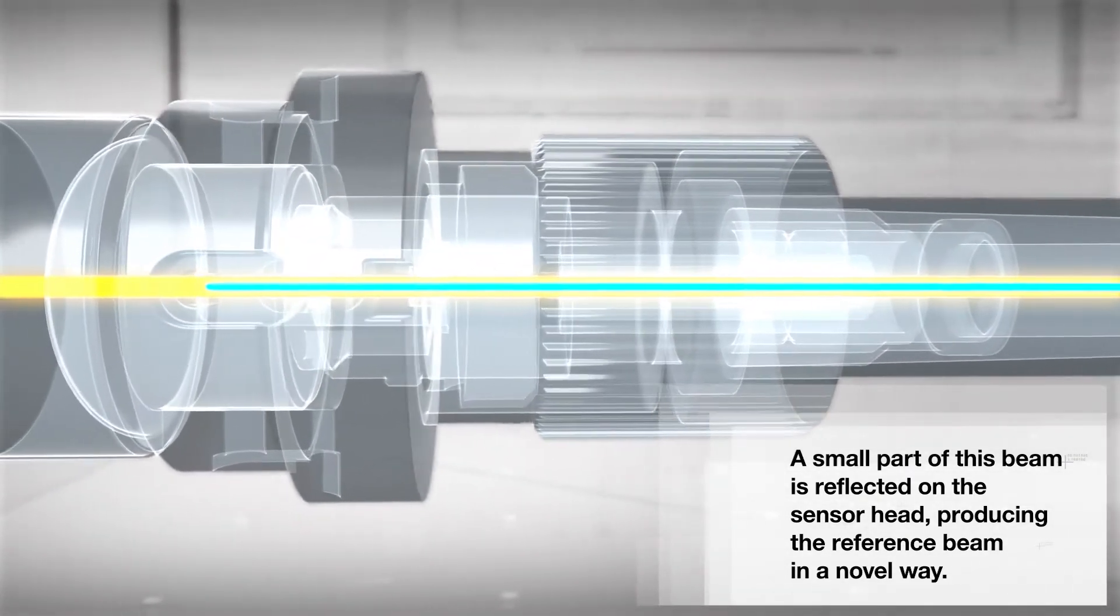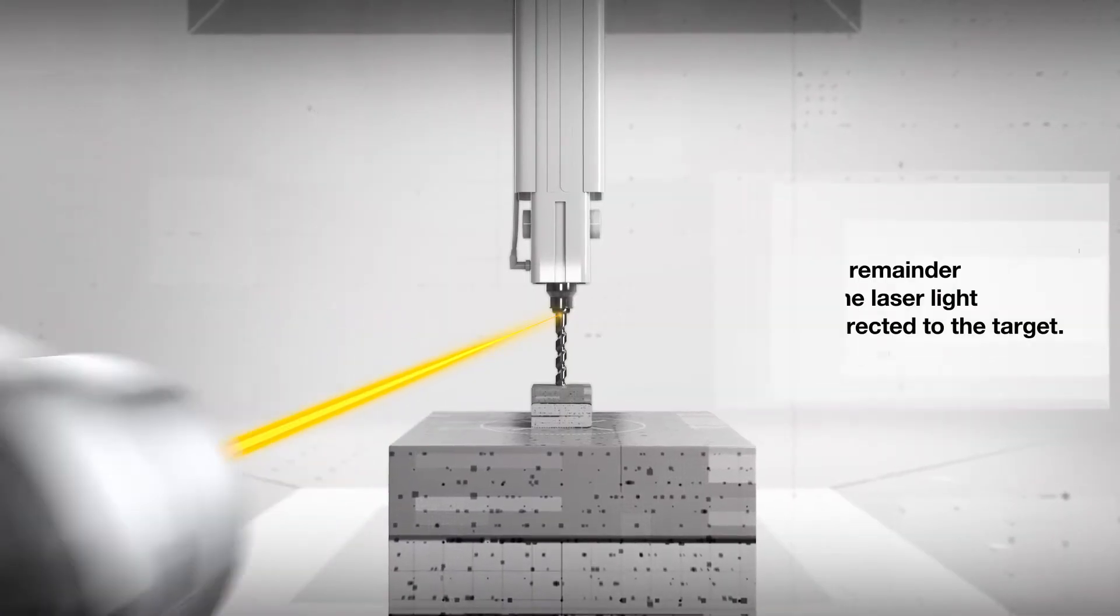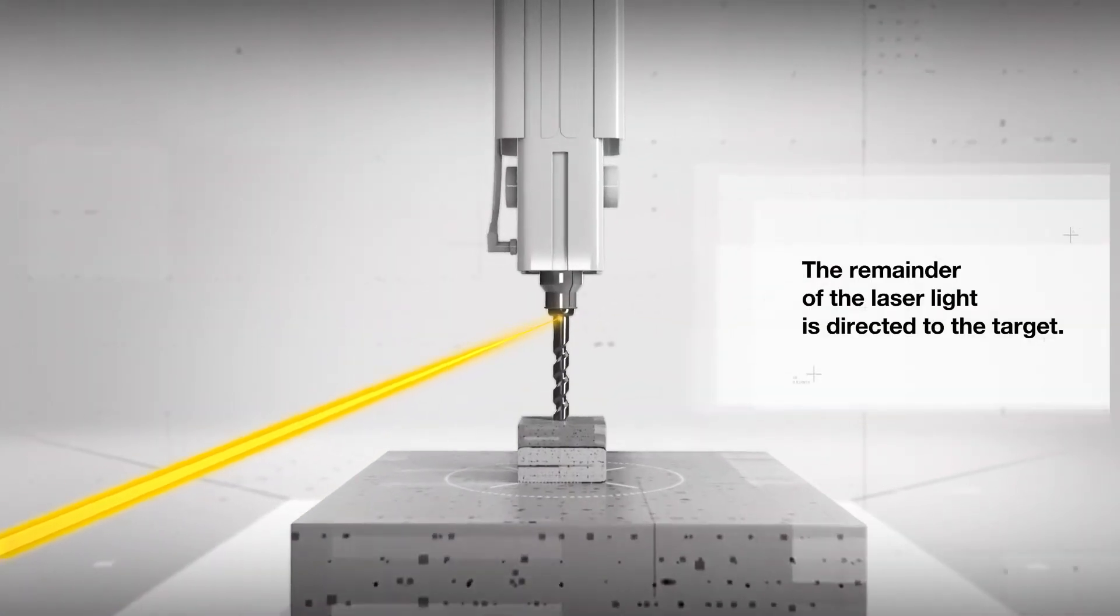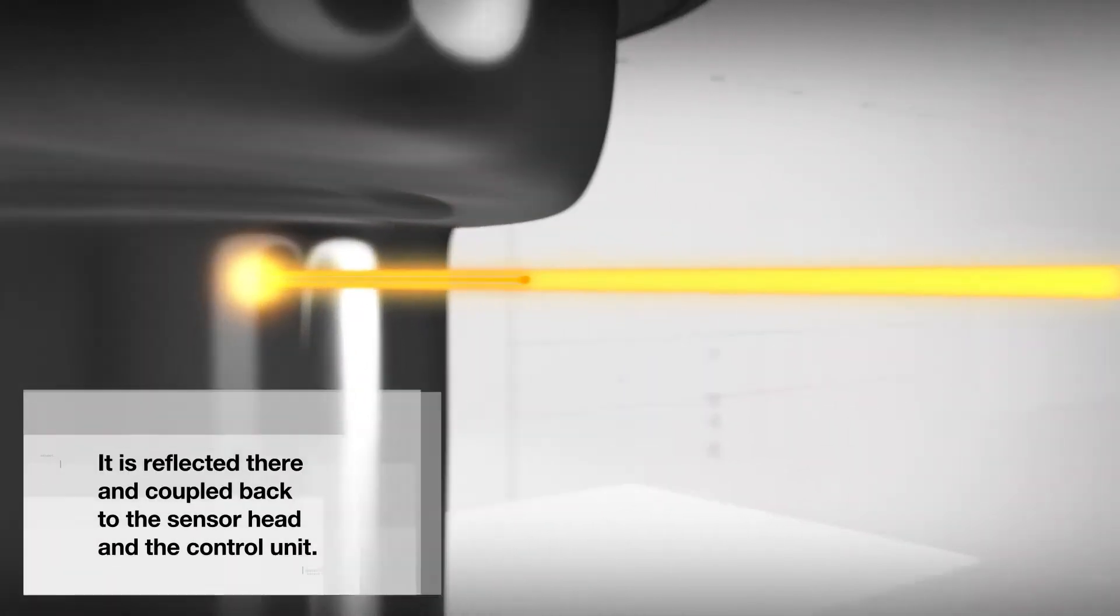The remainder of the laser light is directed to the target. It is reflected there and coupled back to the sensor head and the control unit.